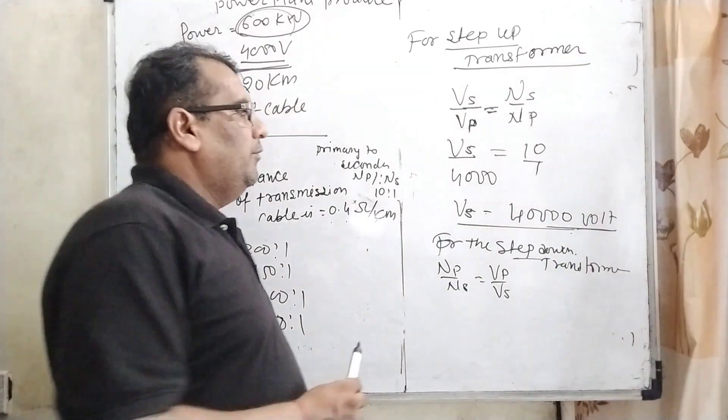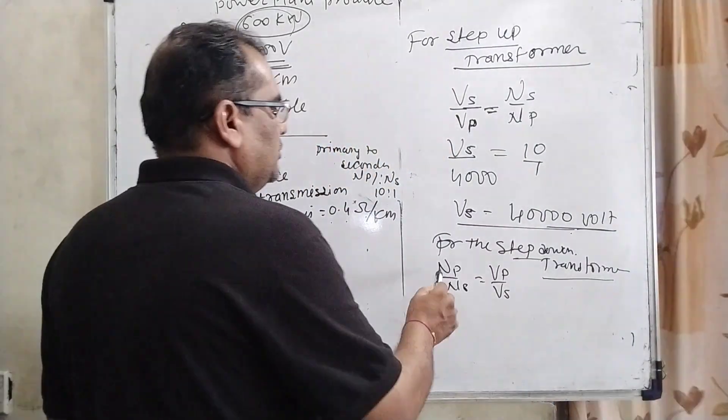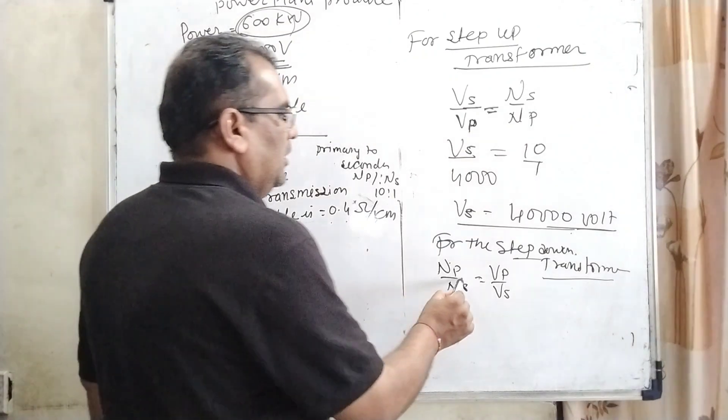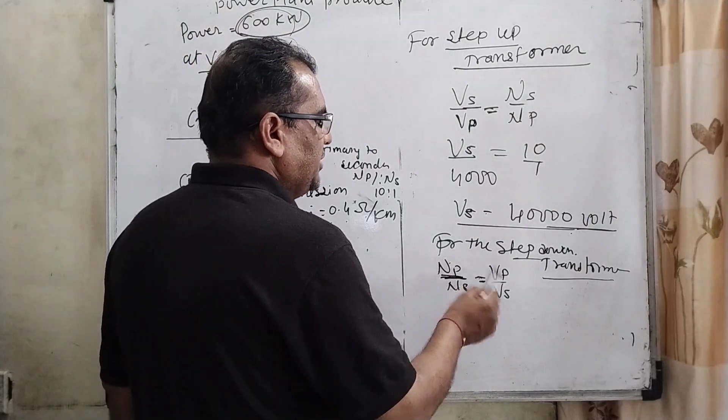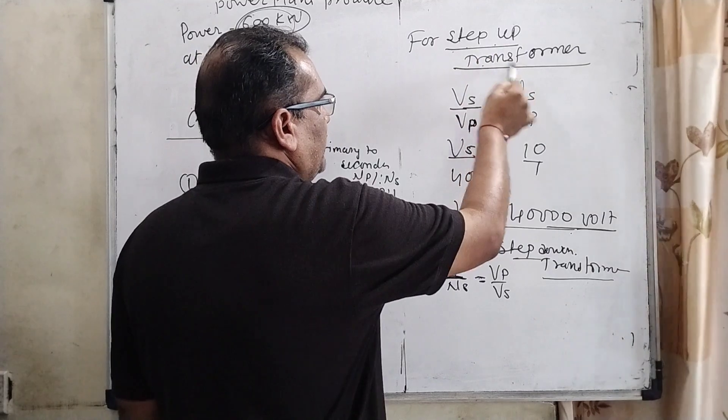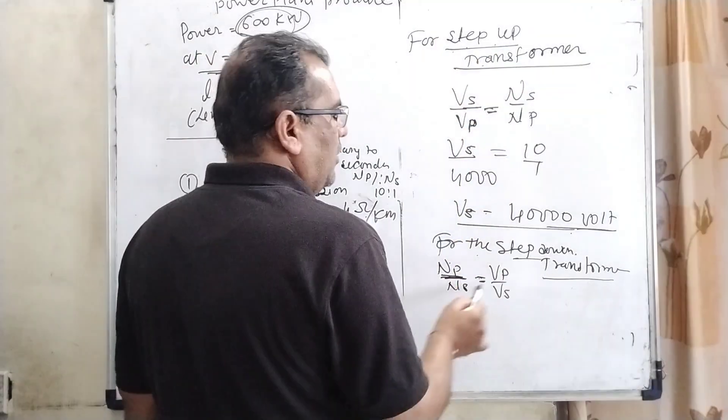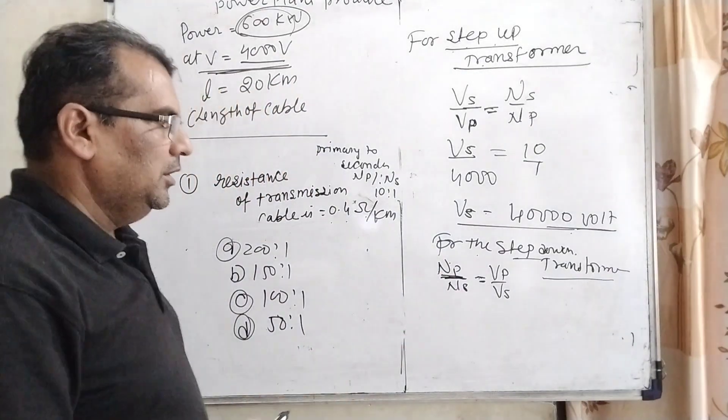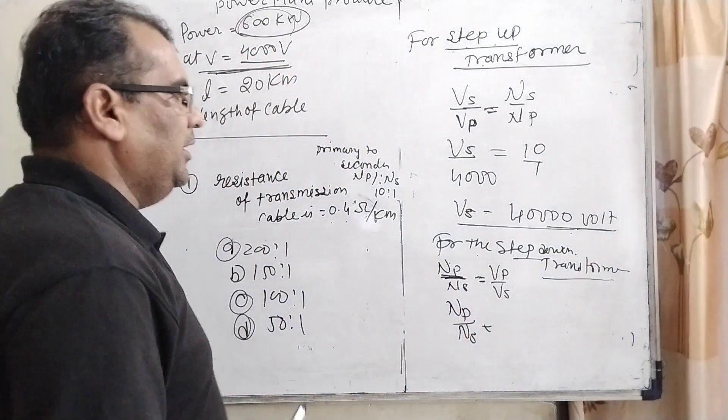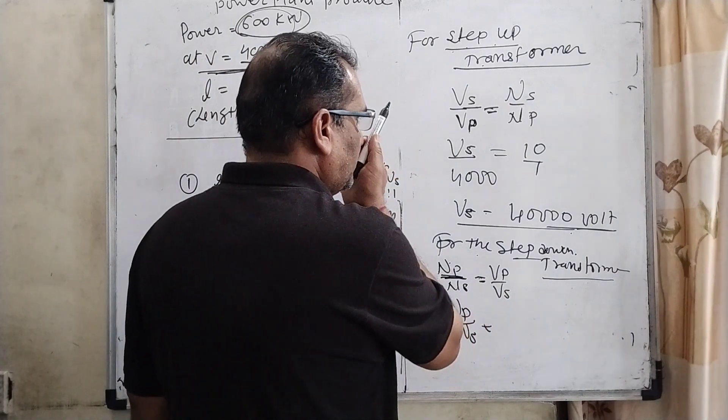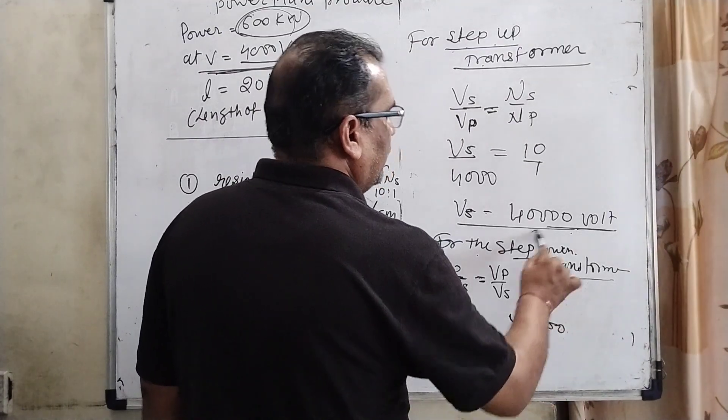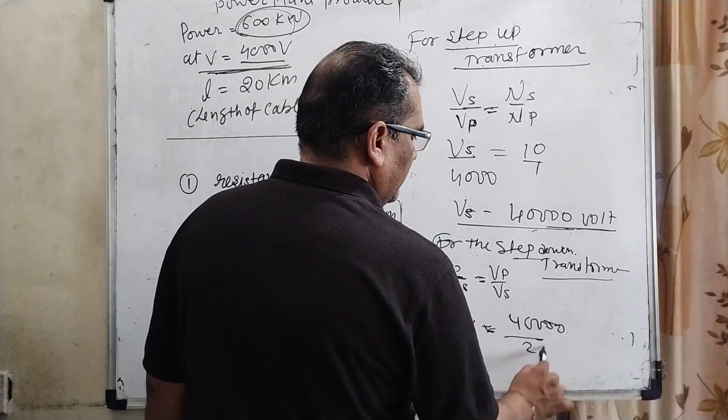And now for the step down transformer we have using here directly proportion Np upon Ns equal to Vp upon Vs. Remember here this ratio of the number of turns will be changed according to the transformer step up and step down. So here in this case Np upon Ns we have to find out and Vp means potential in primary that is 40,000 volt and secondary we have given 200.